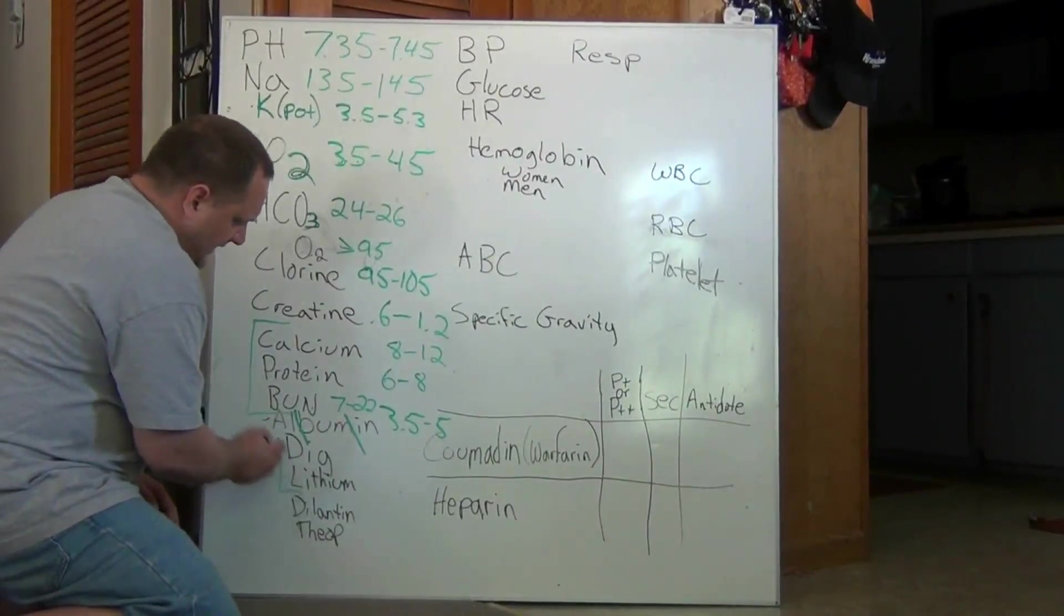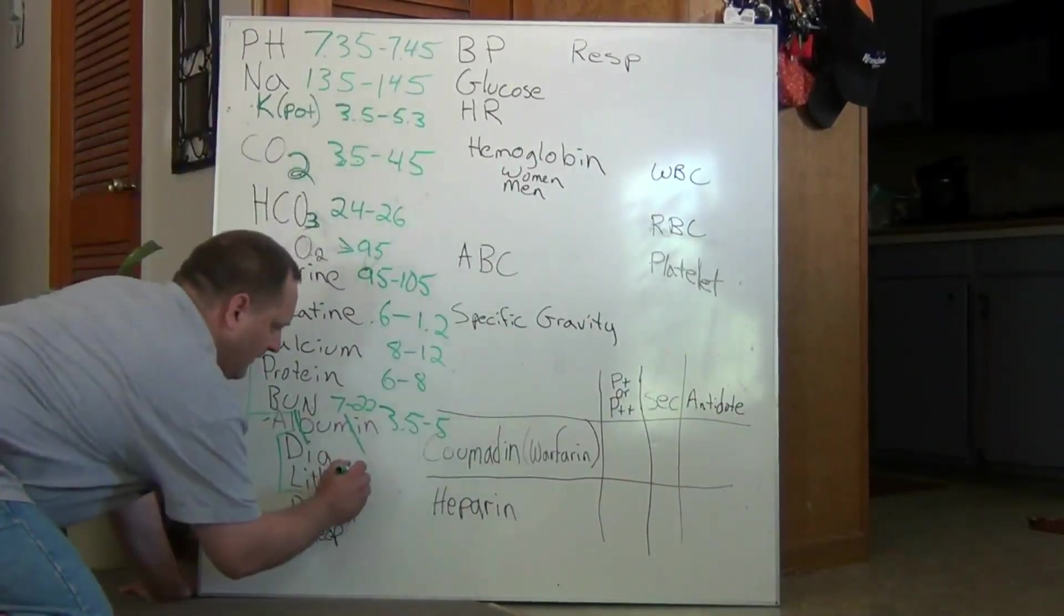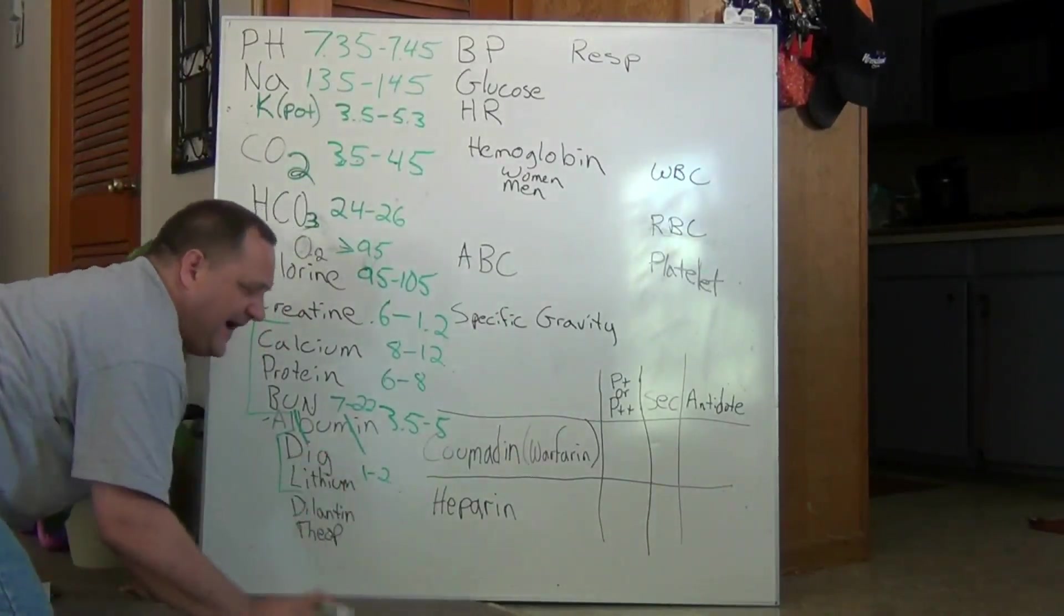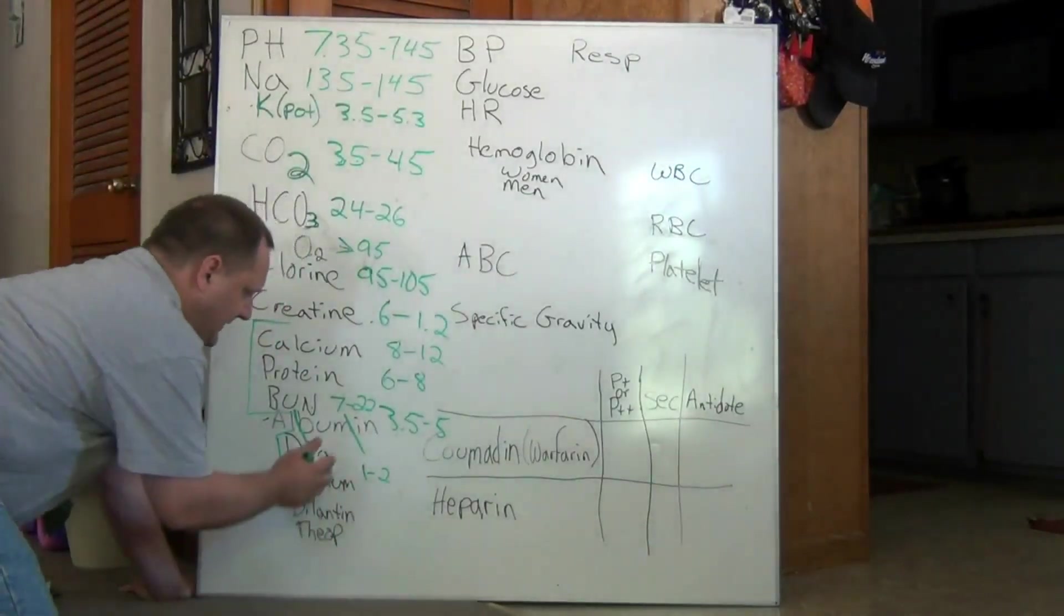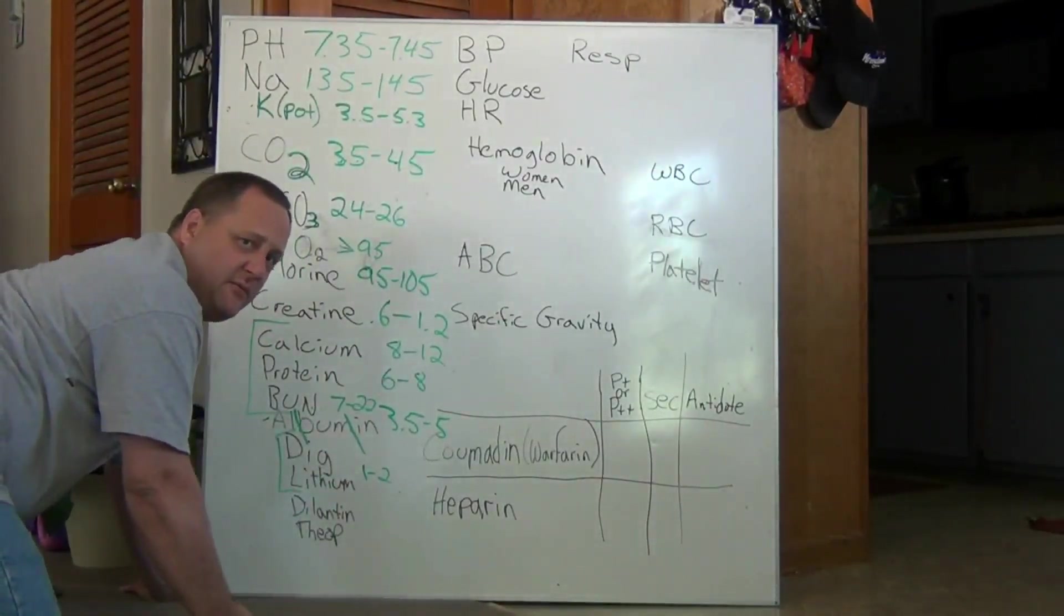Now DIG and lithium is typically around 1 to 2. Some say DIG is 0.5 to 2, but at one point, if we group both of these together on a test, we'll probably get those correct.